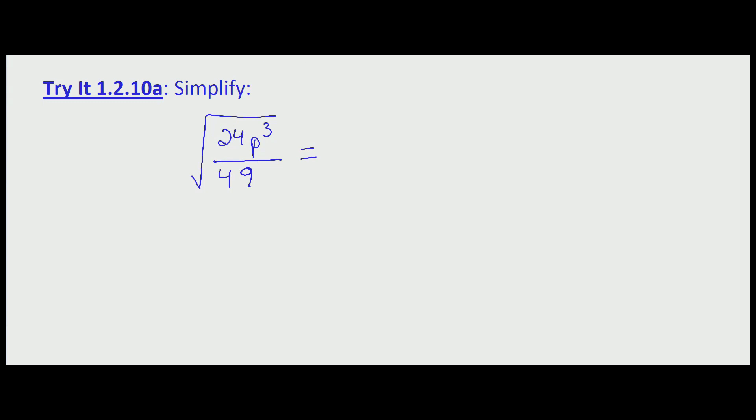So that means that we separate this into the square root of what factors of 24 are perfect squares. Well, 24 is 4 times 6, and 4 is a perfect square.